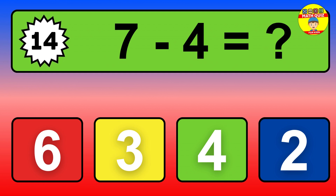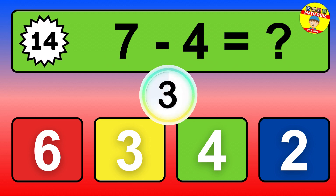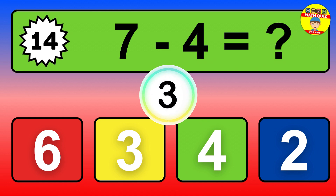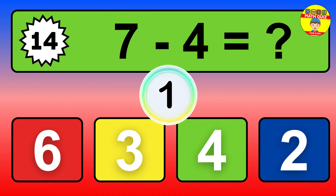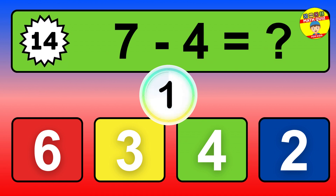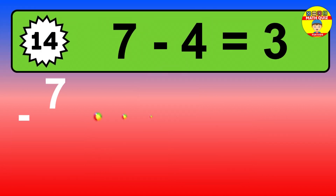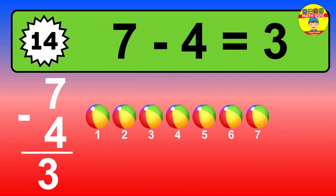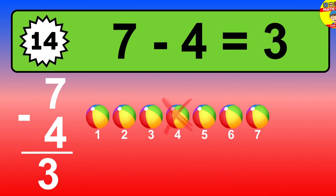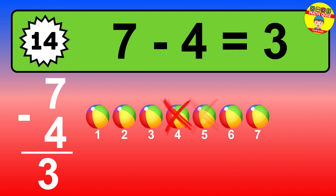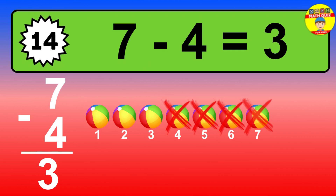Question 14. 7 minus 4 equals what? So the answer is 7 minus 4 is 3. Let's count it. 1, 2, 3.